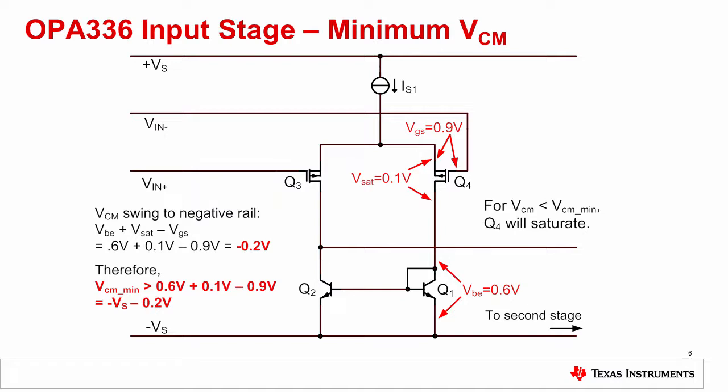The polarities of these voltages give the relationship shown, where the minimum VCM equals VBE plus VSAT minus VGS. Substituting the values for this circuit yields a common mode range of 200 millivolts below the negative rail. Once we reach the common mode limit, Q4 becomes saturated, causing nonlinearity.